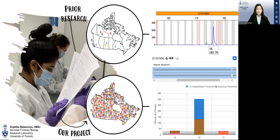Furthermore, MPS can also generate ancestry and phenotype data, providing additional information for investigative purposes, such as missing person cases or disaster victim identification.